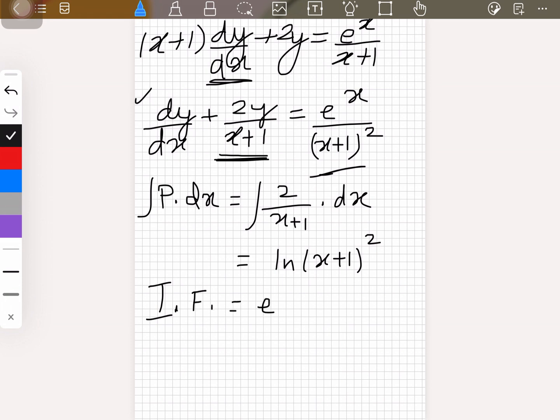So that would be e^(ln(x+1)^2). You know that whenever we have e to the power log, those two cancel each other out. It's nothing very difficult, and we get (x+1)^2. So this is the integrating factor.